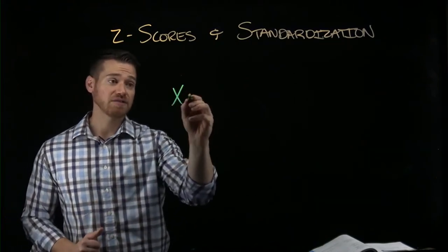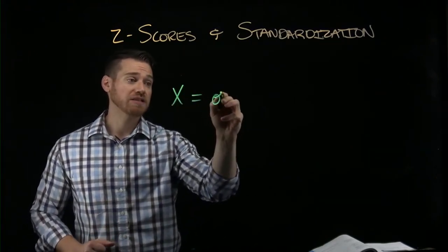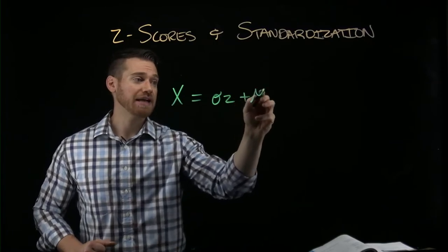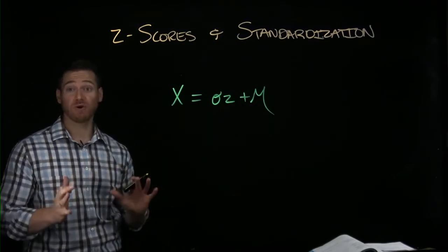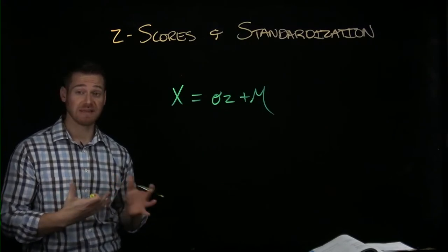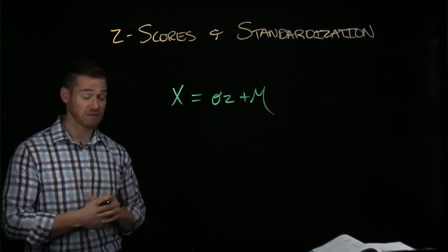Now we saw that we can get an X from a Z score by just multiplying and adding. You can also use this equation to transform the distribution's mean and standard deviation to be something else that you want it to be.